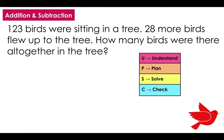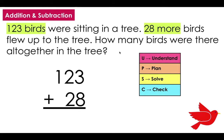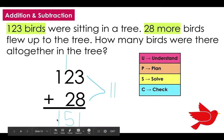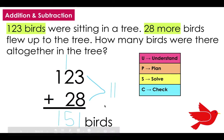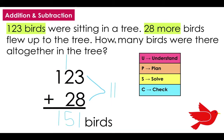First I want to understand what this question is asking me. I'm going to highlight some important information: 123 birds were sitting in the tree, 28 more birds flew into the tree. I know I have to add, and I'm going to plan by using the vertical method to solve. I know 3 plus 8 is 11 — I took my 10 to the tens place and my 1 to the ones — and I got 151. Don't forget your label: birds. Does it make sense that 151 birds would be sitting in the tree now that there are 28 more? It does.